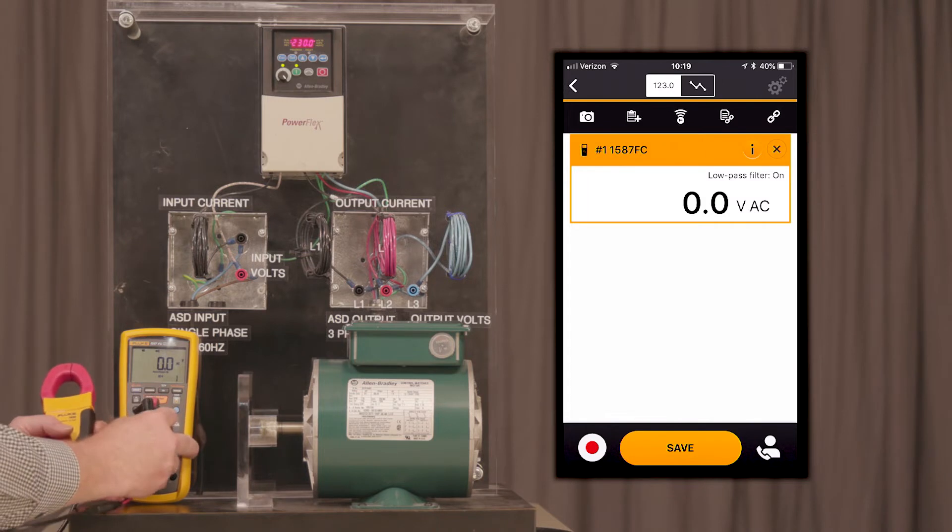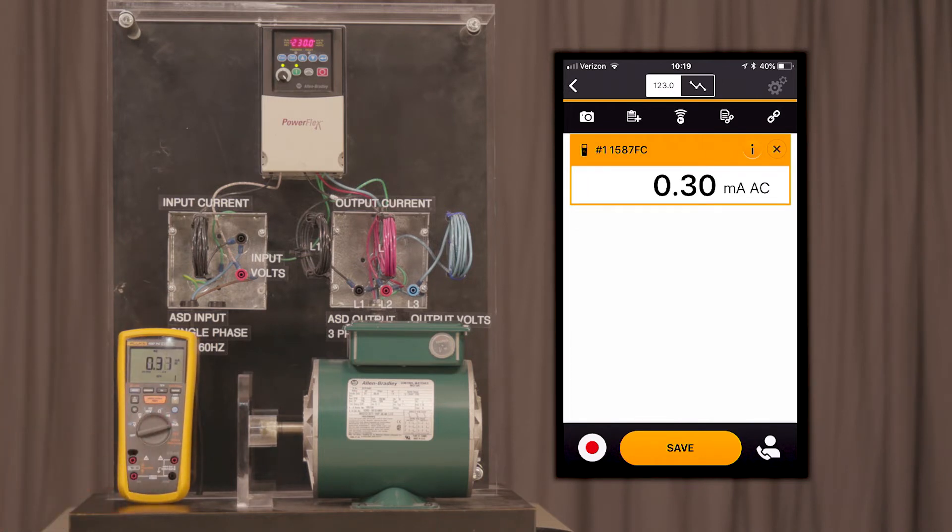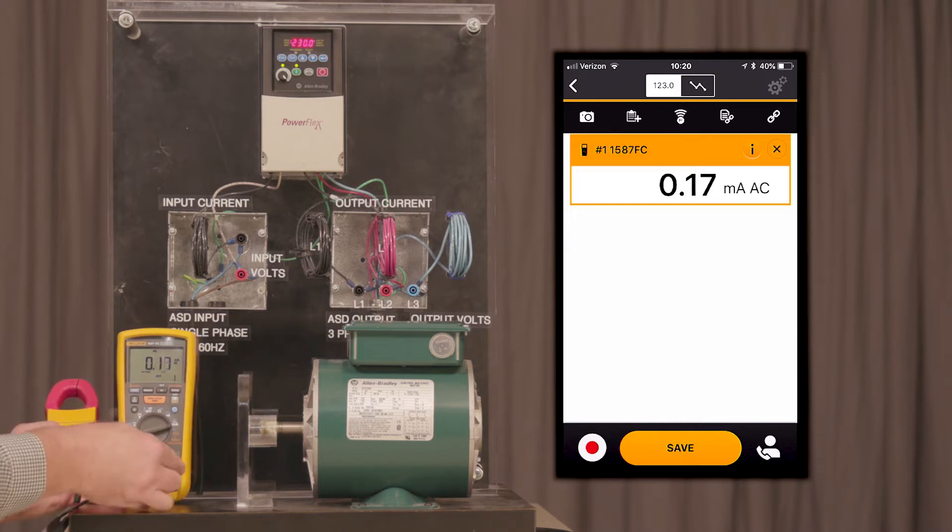Let's go ahead and turn the meter over to milliamps and put the clamp inputs into the meter correctly.